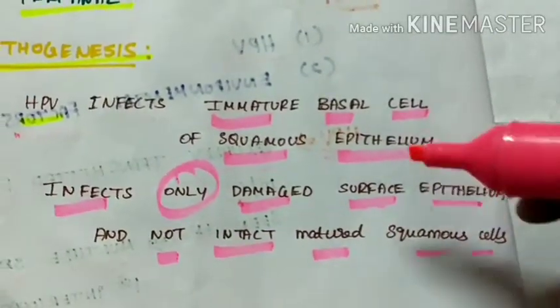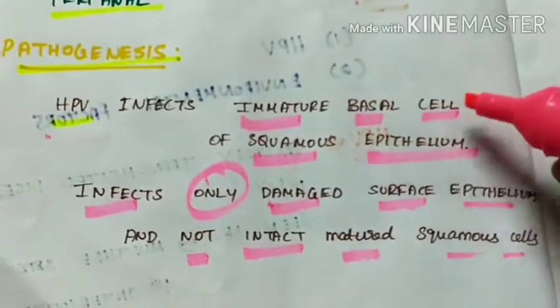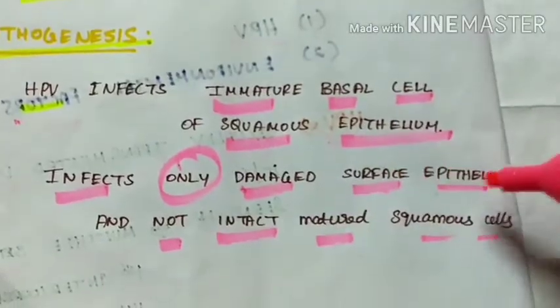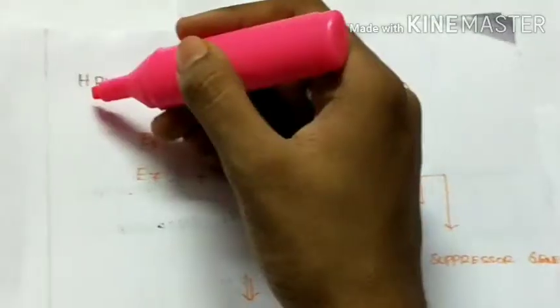So the HPV infects the immature basal cells of squamous epithelium and it infects only the damaged surface epithelium, but not the intact epithelium.